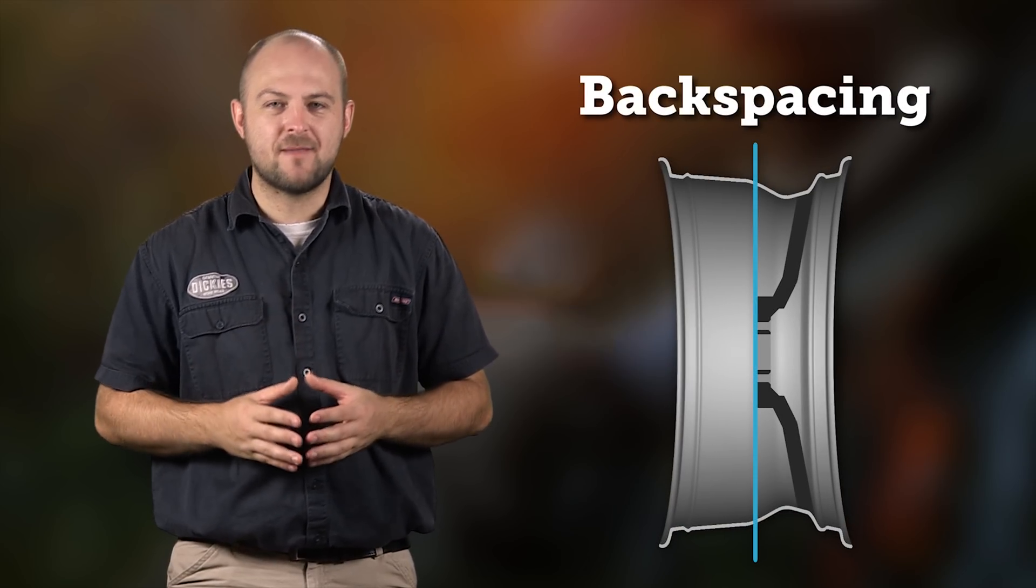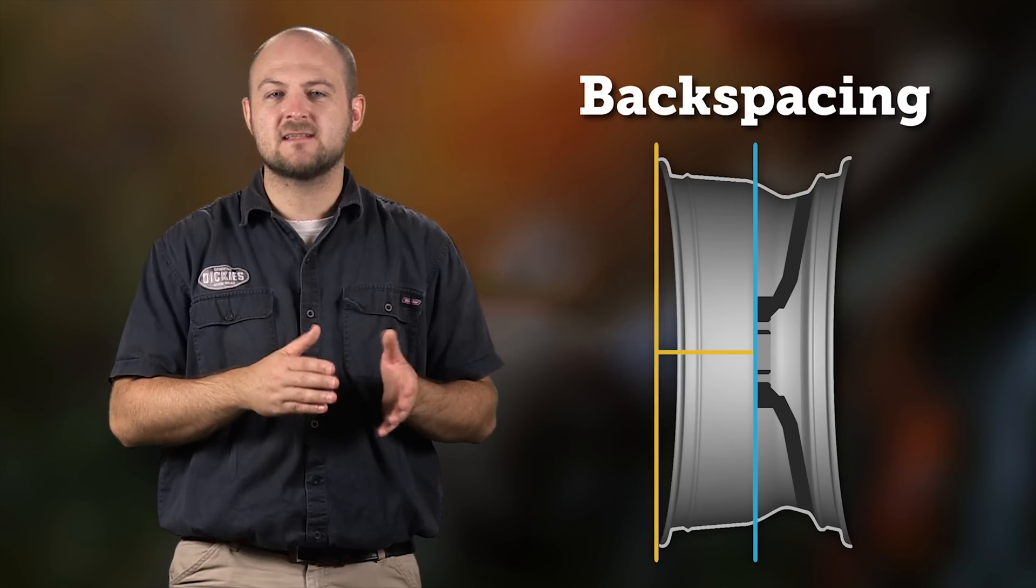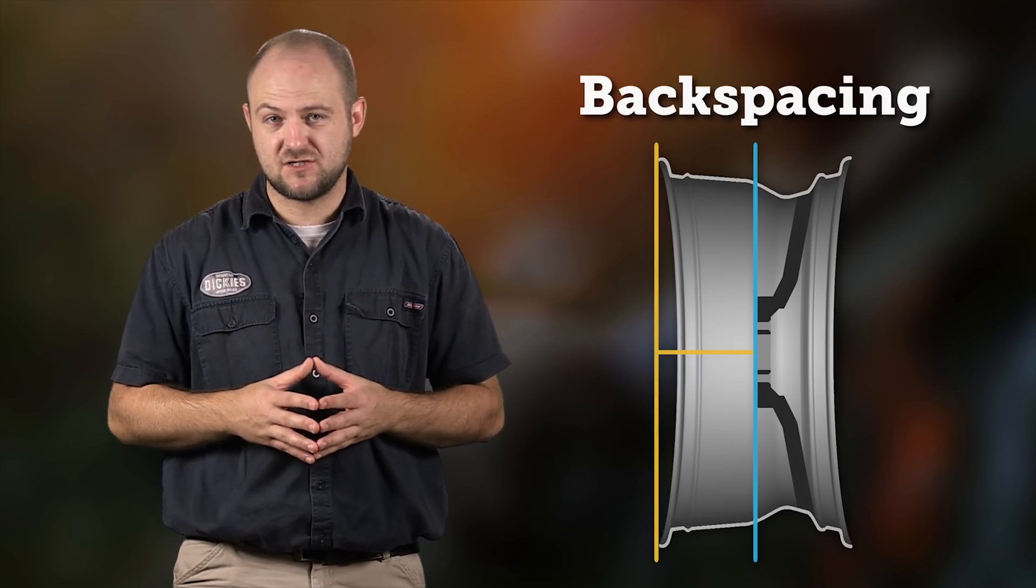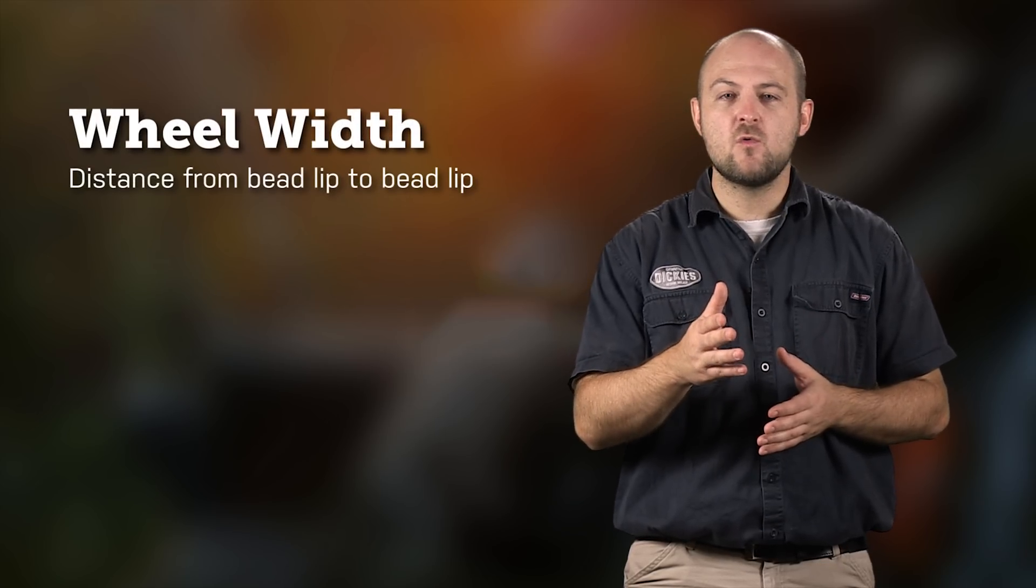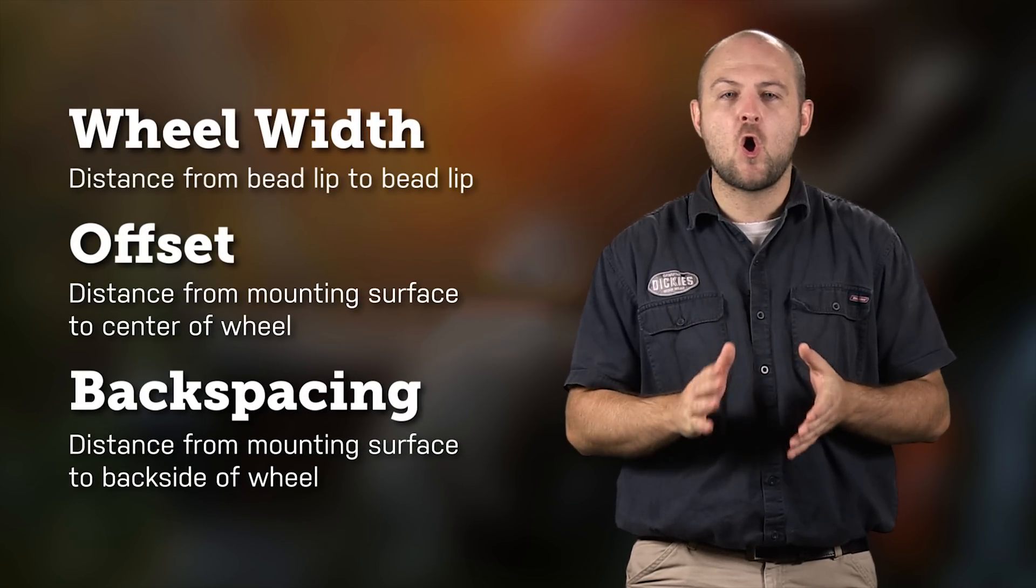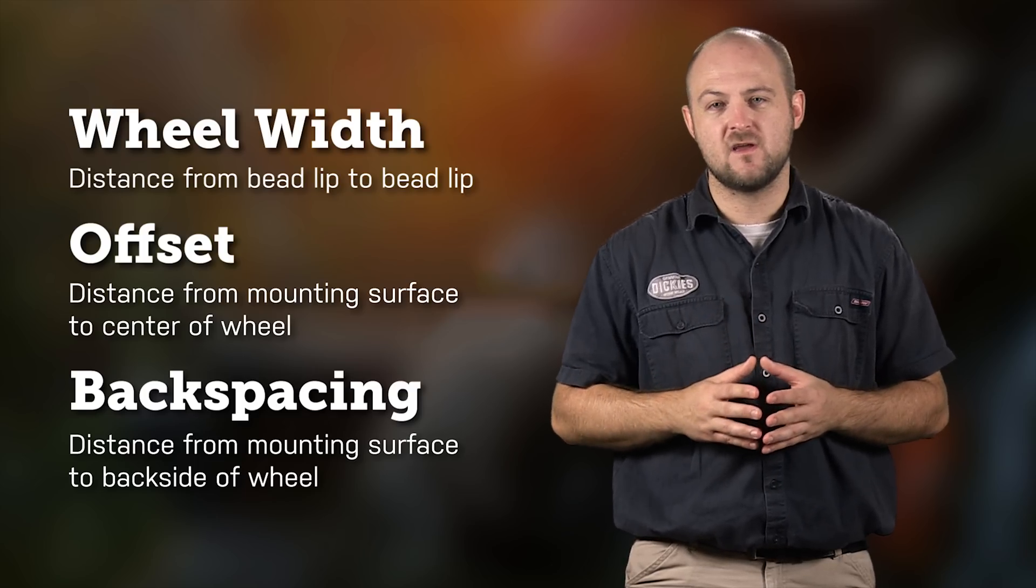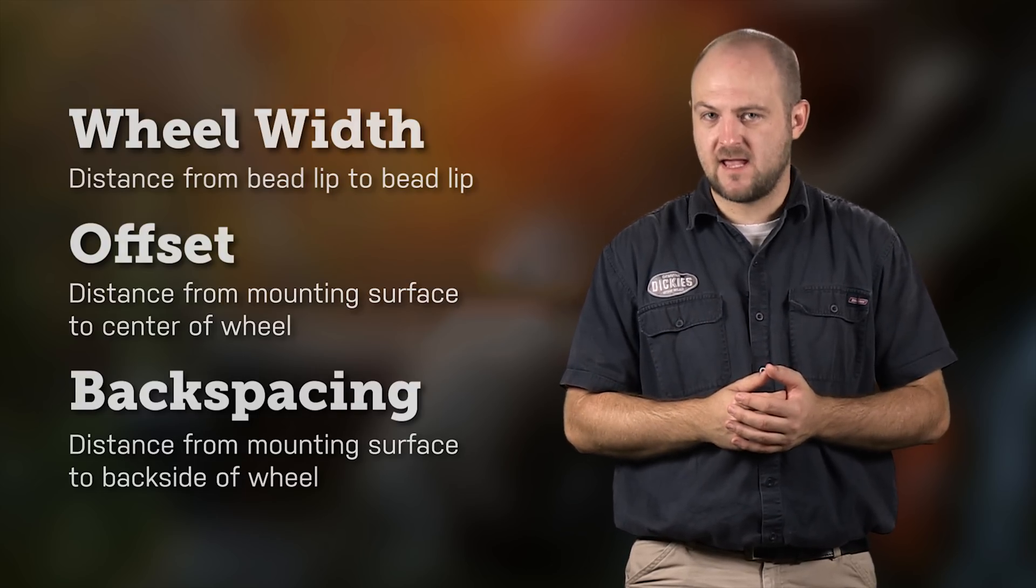Now that we understand offset, we can look at backspacing, which is the distance from the backside of the mounting surface to the inside lip of the wheel and is generally measured in inches. Like I said earlier, wheel width, offset and backspacing are all related and important factors to ensure a proper wheel sizing for your vehicle. Let's look at a few examples of how the three relate.